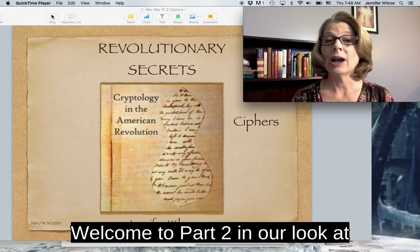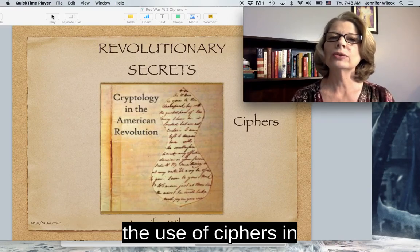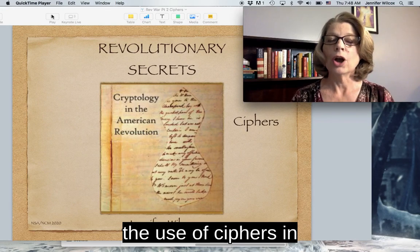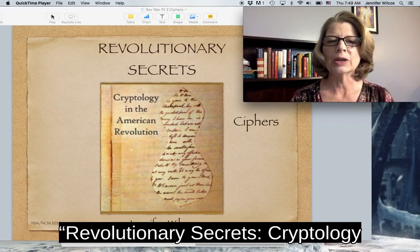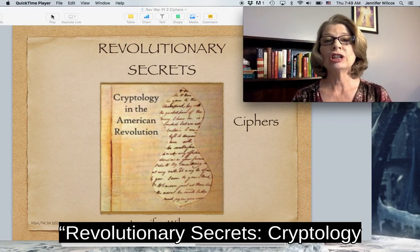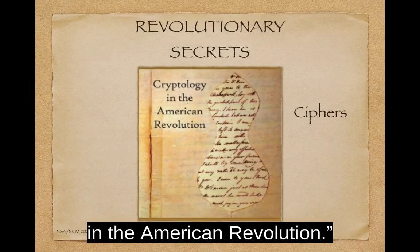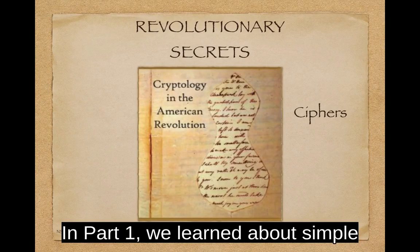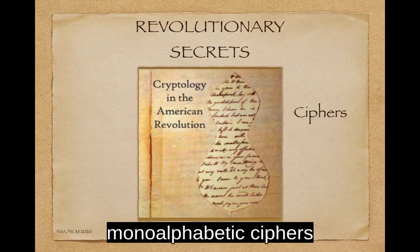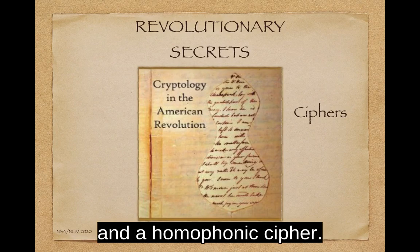Welcome to Part 2 in our look at the use of ciphers in Revolutionary Secrets: Cryptology in the American Revolution. In Part 1, we learned about simple monoalphabetic ciphers and a homophonic cipher.